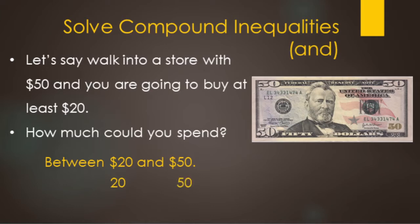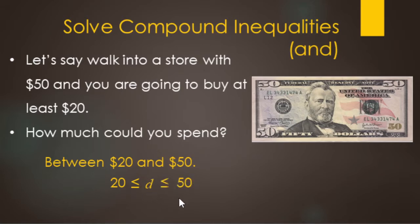So we can write this as one of these and-style compound inequalities. Our minimum is $20 and our maximum is $50, and the number of dollars is going to be between the $20 and the $50. Since $20 is the least, $20 is less than or equal to the number of dollars — or equal to because we could actually spend $20 — and the number of dollars is less than or equal to $50. There's our least, there's our most, our dollars are in between.